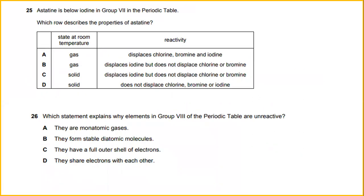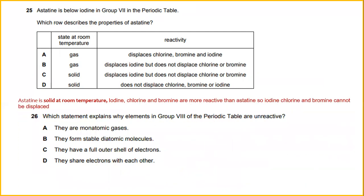Astatine is below iodine in group 7 in the periodic table. Which row describes the properties of astatine? Astatine is solid at room temperature. Iodine, chlorine, and bromine are more reactive than astatine, so they cannot be displaced by astatine. The answer would be D.